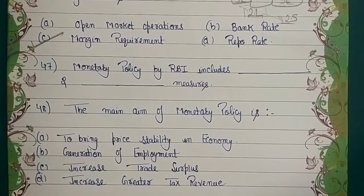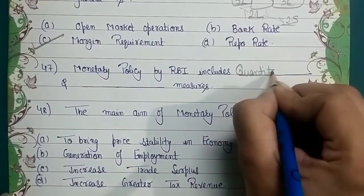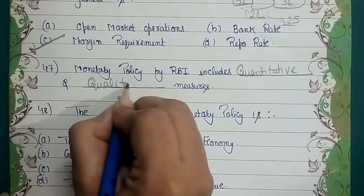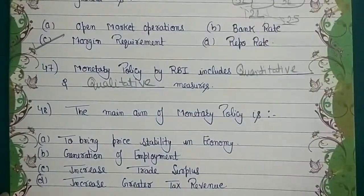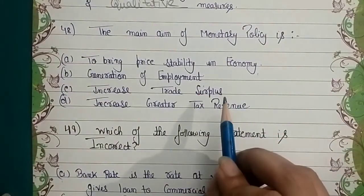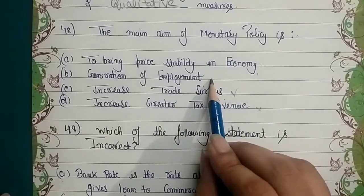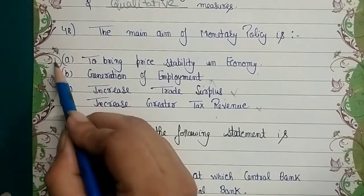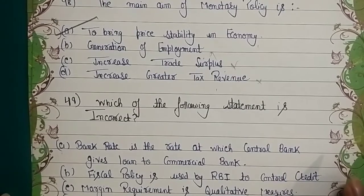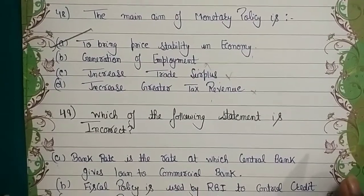Monetary policy by RBI includes quantitative and qualitative measures. The main aim of monetary policy is price stability — ensuring the economy neither goes into excessive inflation nor deflation — not trade surplus or tax revenue. RBI's monetary policy ensures price stability in the economy.